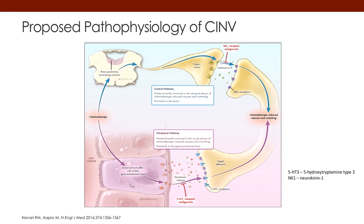This next picture shows in detail the chemicals being released as part of this process. If you look on the bottom left-hand corner of the slide, you can see the gut — these are the luminal cells of the GI tract. Chemotherapy, as mentioned, can act peripherally and cause damage to cells called enterochromaffin cells, and these cells will release a substance called serotonin.